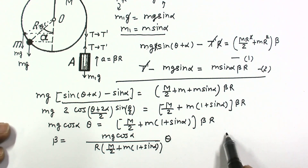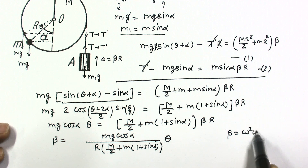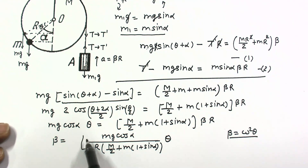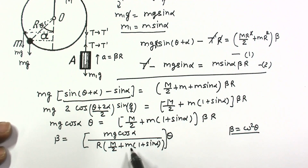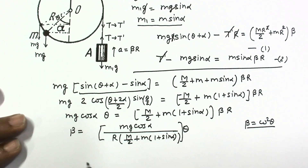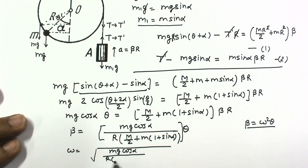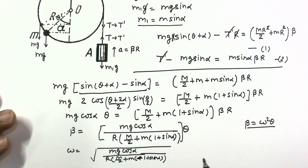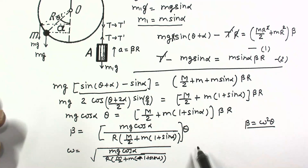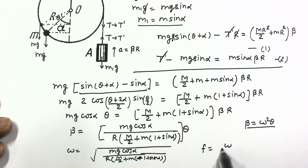Since β = ω²·θ for simple harmonic motion, the angular frequency is ω = √[Mg cos α / (M/2 + M(1 + sin α))]. The frequency of small oscillations is therefore f = ω / (2π), which is the final answer to this problem.